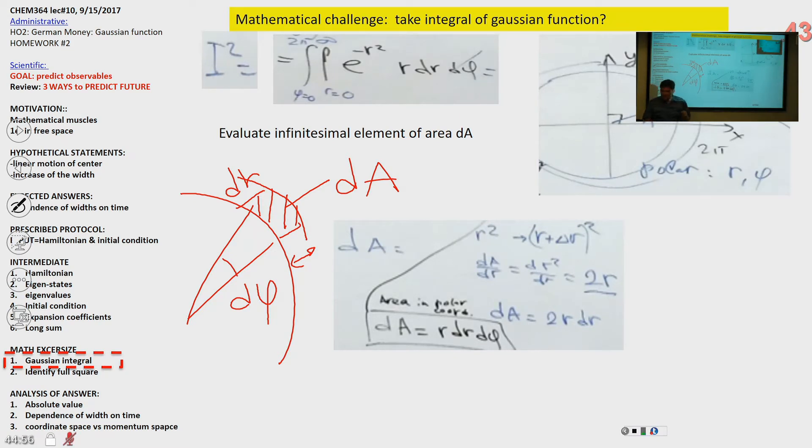Now, our integral squared will be formulated as the function times element of area. Right? And here we integrate over radius and over angle. For radius, we go from 0 to infinity. For angle, we make one full circle, from 0 to 2 pi.